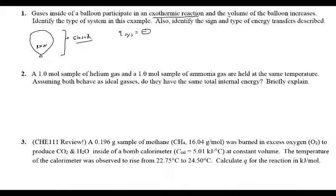We notice that the volume of the balloon increases, which means the work of the system — since work is being done by the system — also has a negative sign. That's good old PV expansion work we've talked about in class. You've got energy being lost in the form of both heat and work, so both of those are negatives.